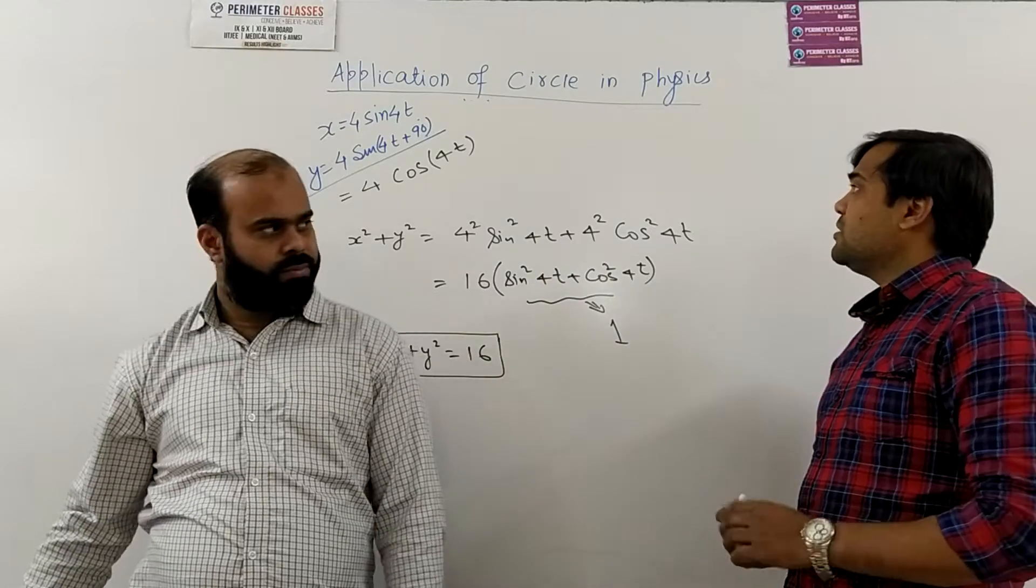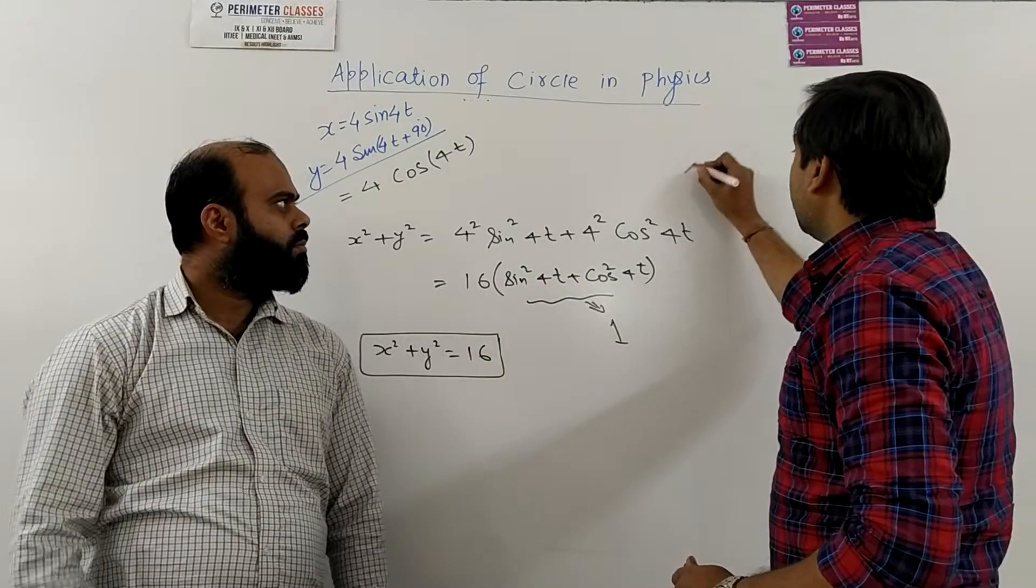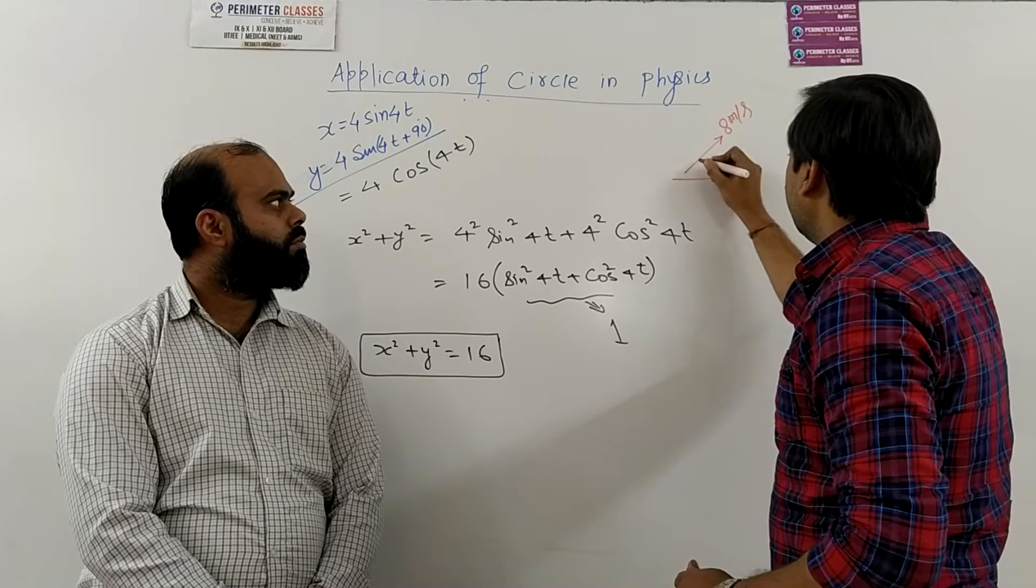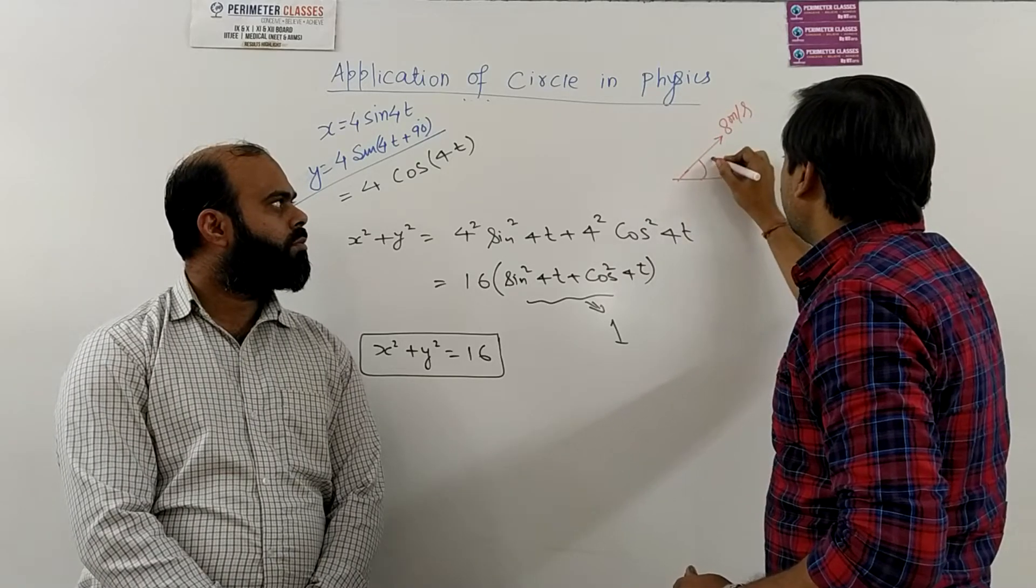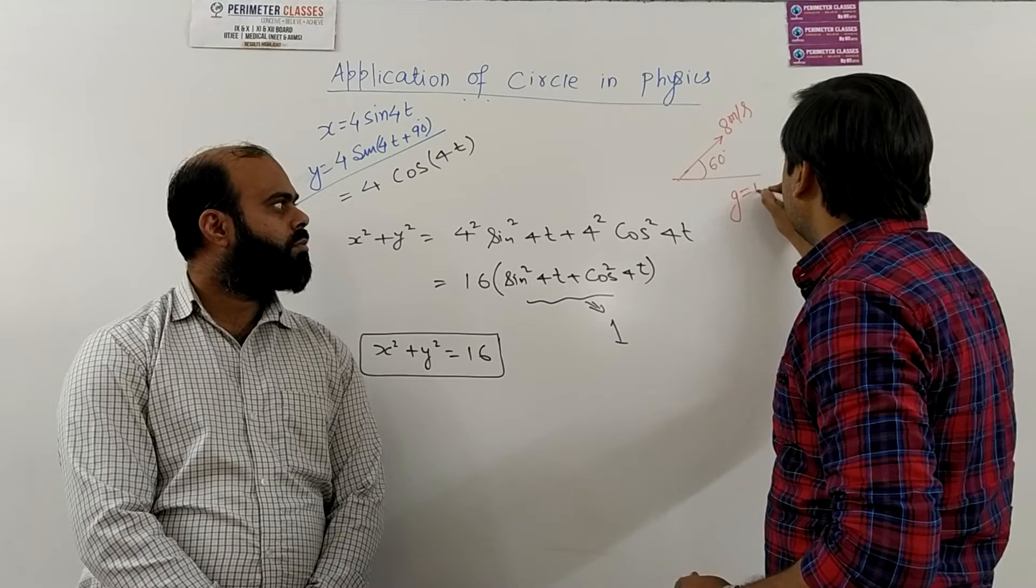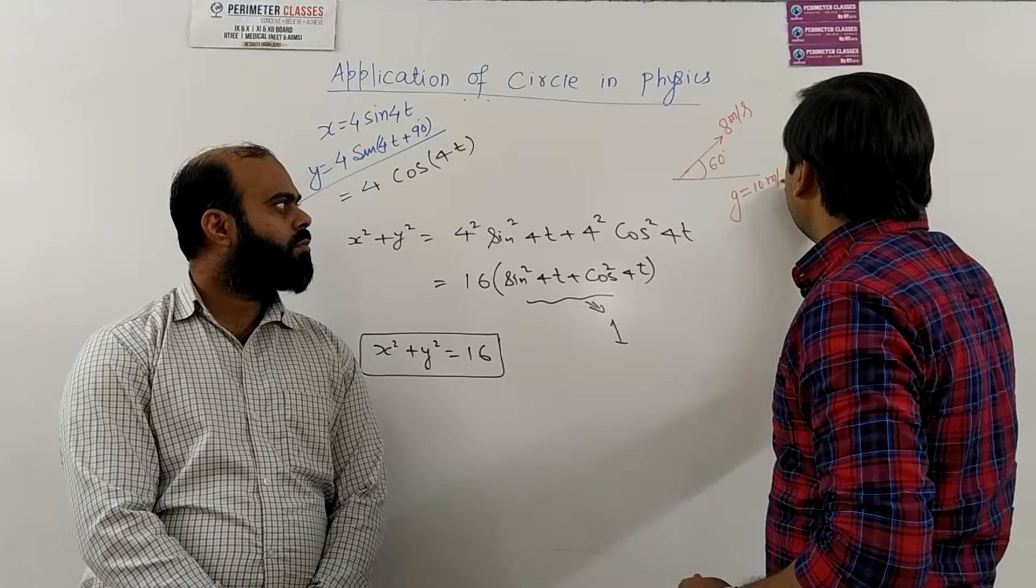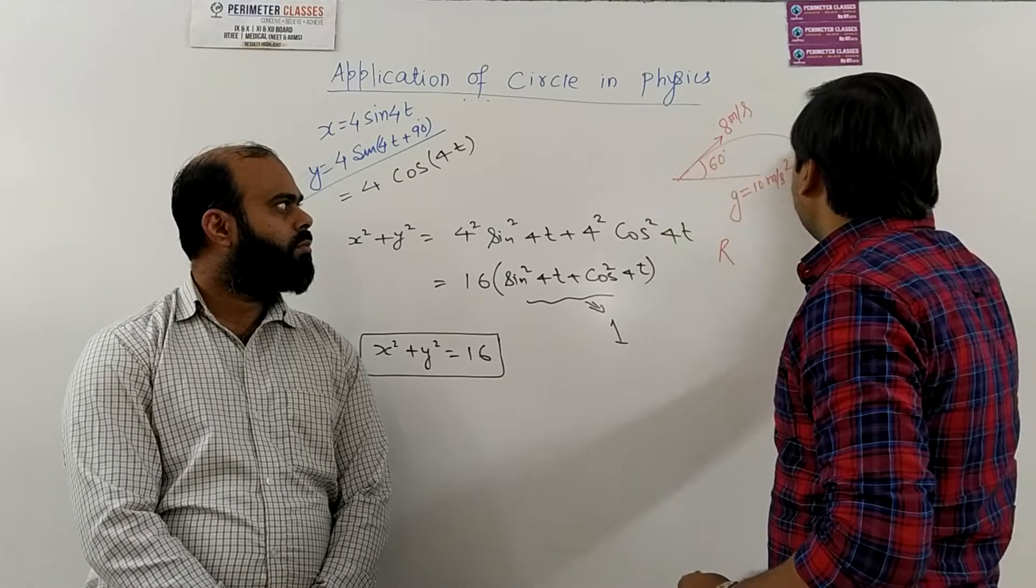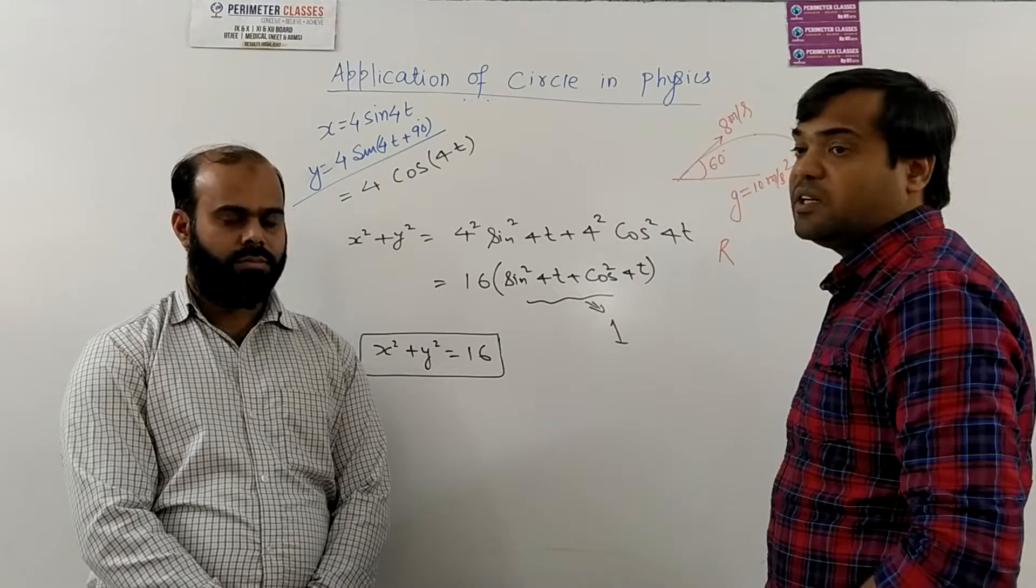The second question that was given to you was: a particle is projected with a speed of 8 meter per second at an angle from horizontal which was given as 60 degree and we have to take g as 10 meter per second square. Now we have to calculate the radius of curvature when the particle is at the highest point here.